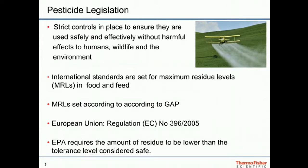In the European Union, the MRLs are set under Regulation EC No. 396-2005. MRLs are set for the vast majority of pesticide commodity combinations. Where substantive MRLs are not available — i.e. MRLs based on field studies and on good agricultural practice — then normally the MRL defaults to a concentration of 10 ppb or 10 milligrams per kilogram. Consequently, there are more than 100,000 MRLs for different pesticide commodity combinations.